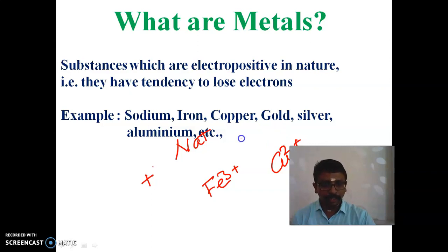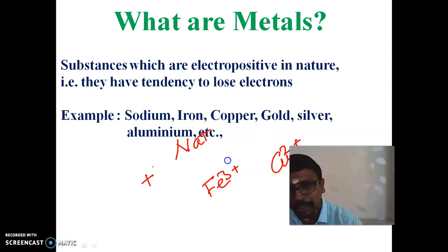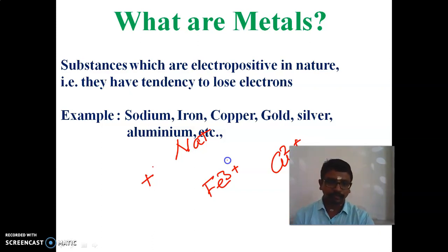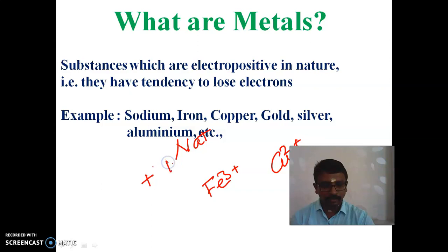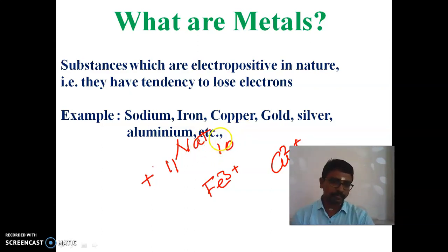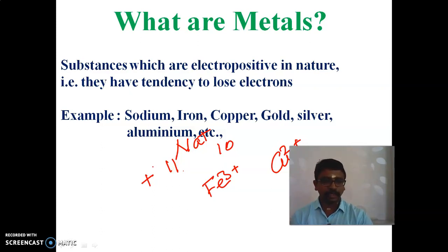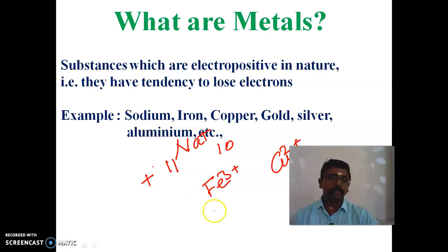So the metals having the electropositive character have the tendency to lose electrons. For example, sodium has atomic number 11, so as Na+ it has lost one electron and has 10 electrons. Similarly, Fe3+ loses three electrons and Cu2+ loses two electrons. In the same way, metals with electropositive character will lose electrons. See you in the next session.